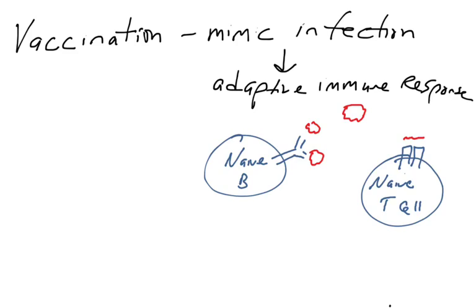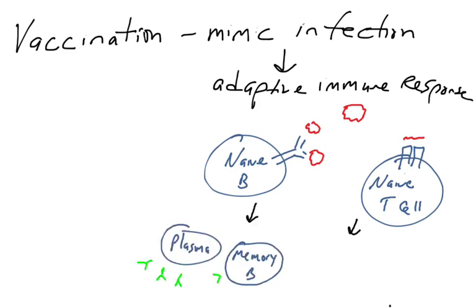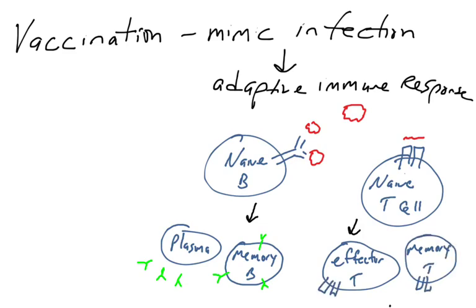In a successful vaccination, individuals are injected with molecules that mimic the infection of a natural pathogen, so that B cells and T cells will recognize this molecule as the pathogen. These cells will activate and form effector cells — plasma cells and effector T cells — but also form memory cells: memory B cells and memory T cells.